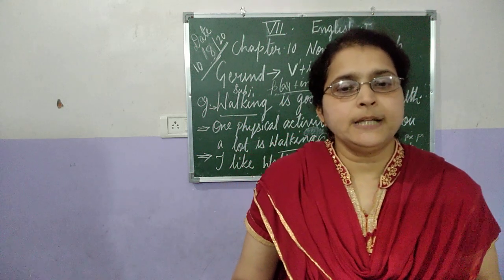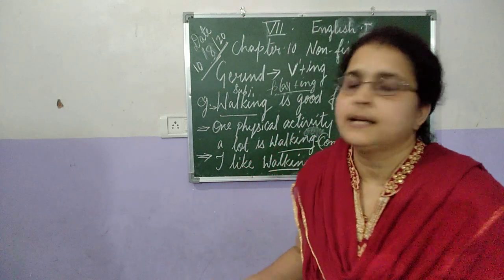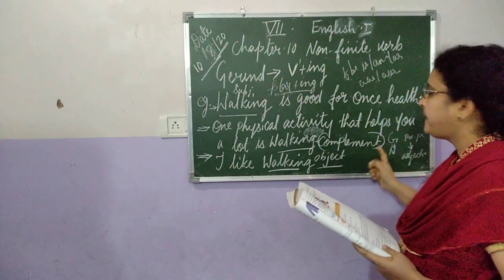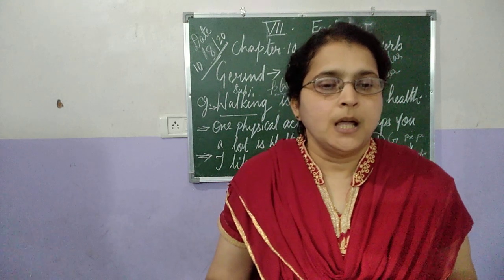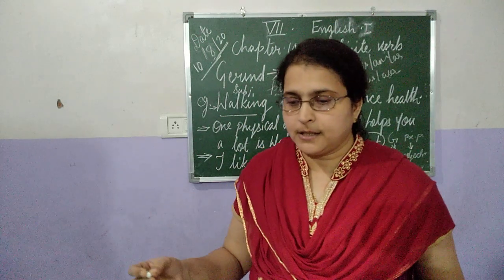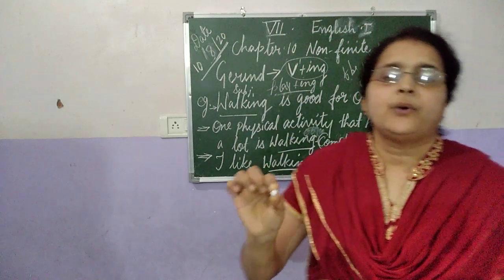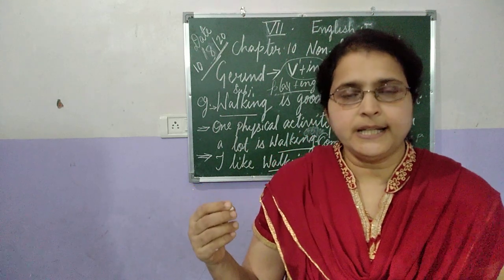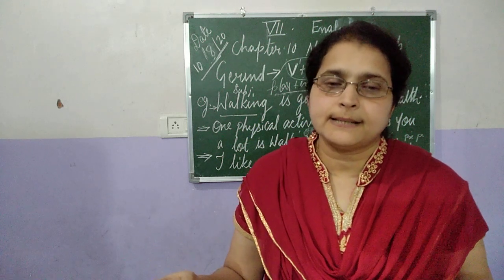A verb ING form can be used in two ways: as a Gerund and as a present participle. The Gerund is used as a noun in a sentence, while the present participle is used as an adjective in a sentence. That is the difference between Gerund and present participle.